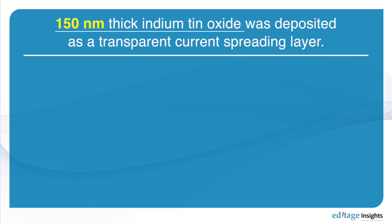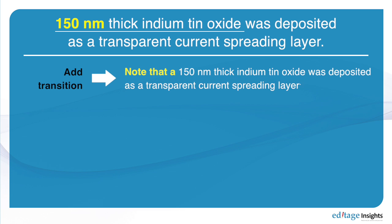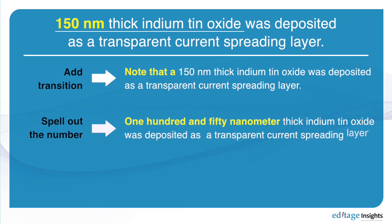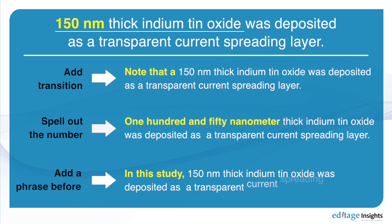There are three ways that you can change this. First, you can add a transition: 'Note that a 150 nanometer thick ITO layer was deposited.' Second, you can put words at the beginning of the sentence and write out the full term instead of starting with '150 nanometer.' Or third, you can add a different type of transition, such as 'In this study.' There are three different ways to overcome starting a subject with a number.